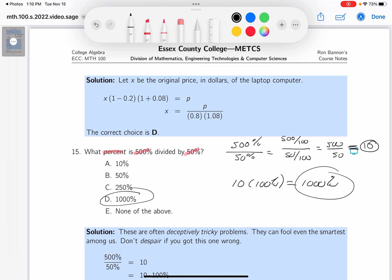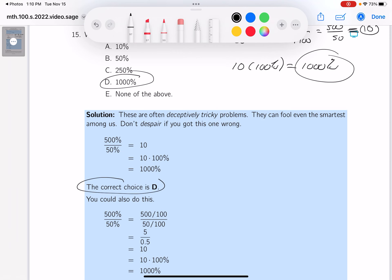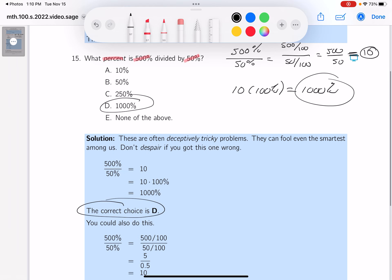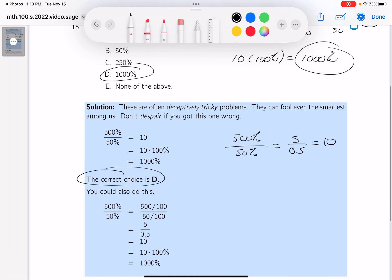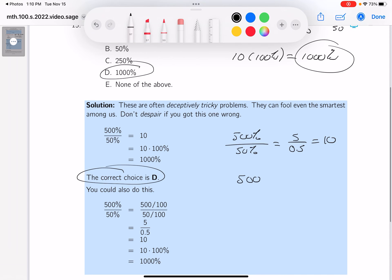The answer would be D. Let's check the key—the correct choice is D. Now there are other ways of doing this. For example, you could convert these to decimals: 500% over 50% would be 5 divided by 0.5, which again is 10.